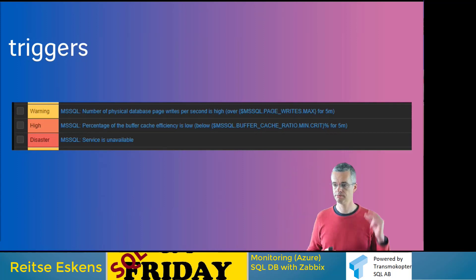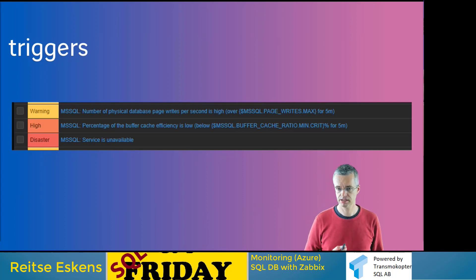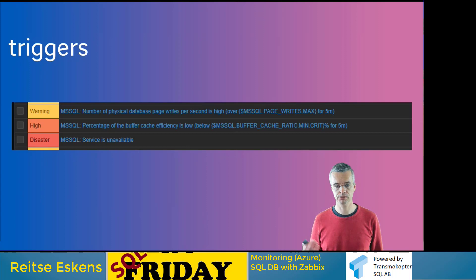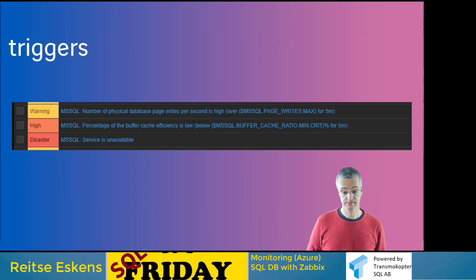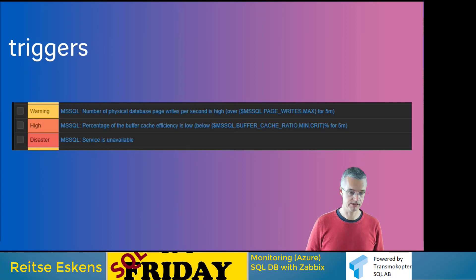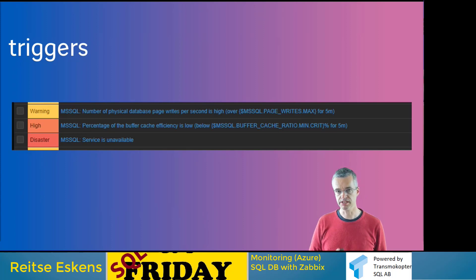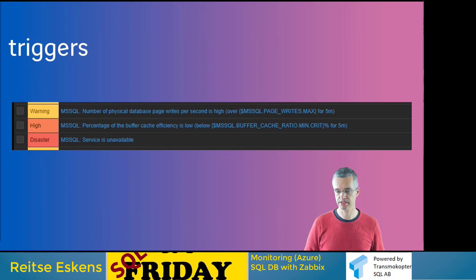Triggers tell you something happened and that you need to act. There are several levels: warning means look into something, high means look at it now, and disaster means you were too late. You need to make sure triggers are configured correctly. When a trigger fires it shows on your main dashboard. You can also disable triggers, but make sure you control who can do that — if someone disables the 'service unavailable' trigger they can do all kinds of nasty things.